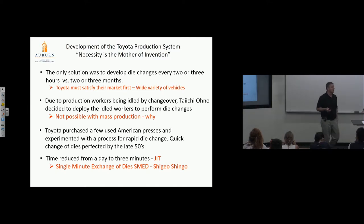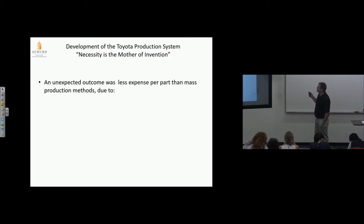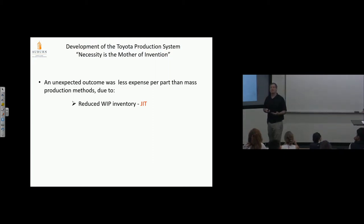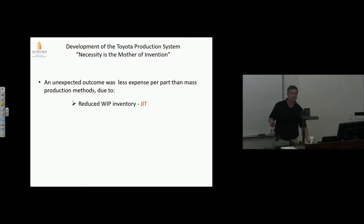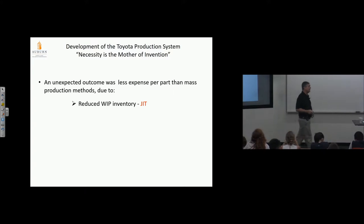Unexpected outcome was less expensive per part than mass production. You can understand why unexpected—their motive was to change presses rapidly so they could build all their models with only a handful of presses. But the result was it was much less expensive to build a product. They weren't driving for that—just trying to develop an industry. Work in process inventory was reduced because if I'm not stamping parts just in tons—that's my joke, just in time—I'm producing only what the next process needs when it needs it.